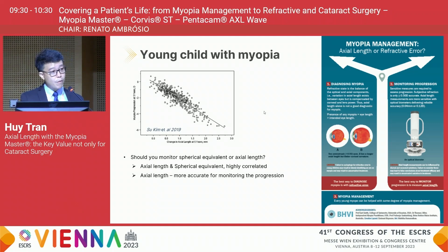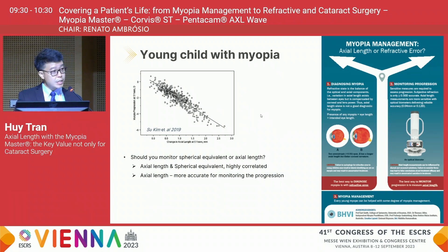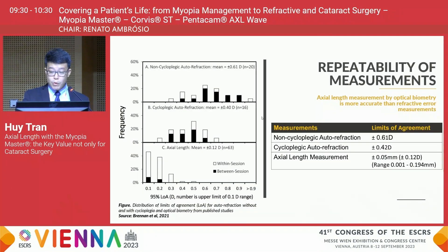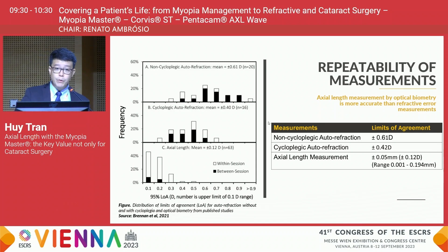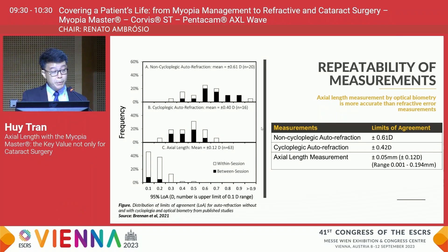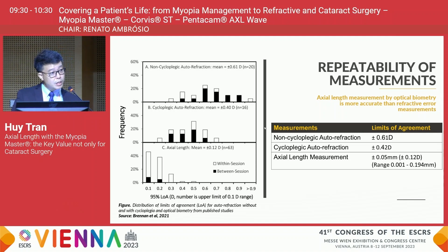There is now enough evidence showing a strong relationship between excessive axial elongation and the risk of visual impairment and myopia-related disease in later life. Axial length measurement by optical biometry is more accurate than refractive measurement. The limit of agreement for spherical equivalent ranges between ±0.5 diopters, while variation in axial length ranges between ±0.05 millimeters, equivalent to ±0.12 diopters — significantly less than the variation seen with spherical equivalent.